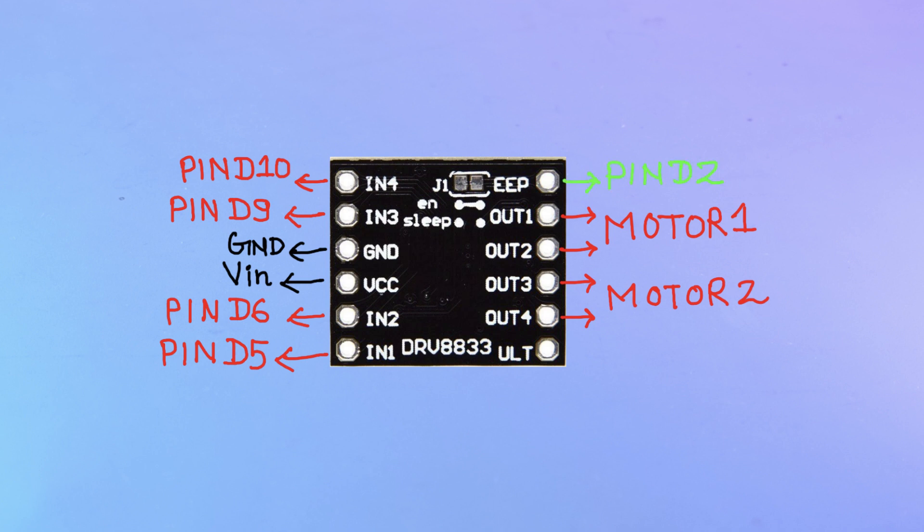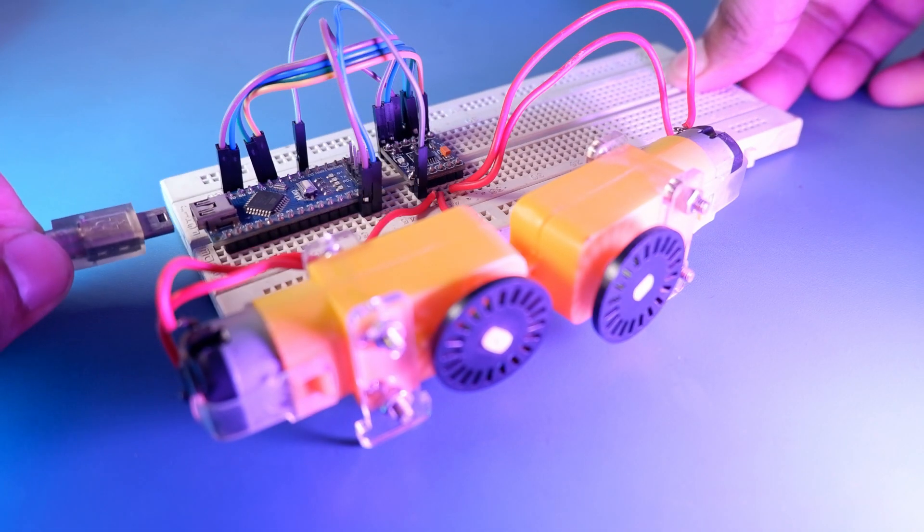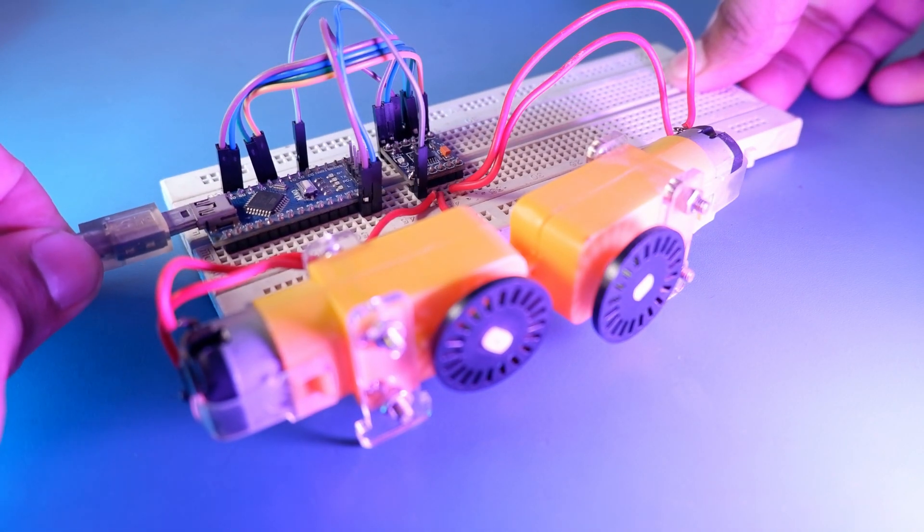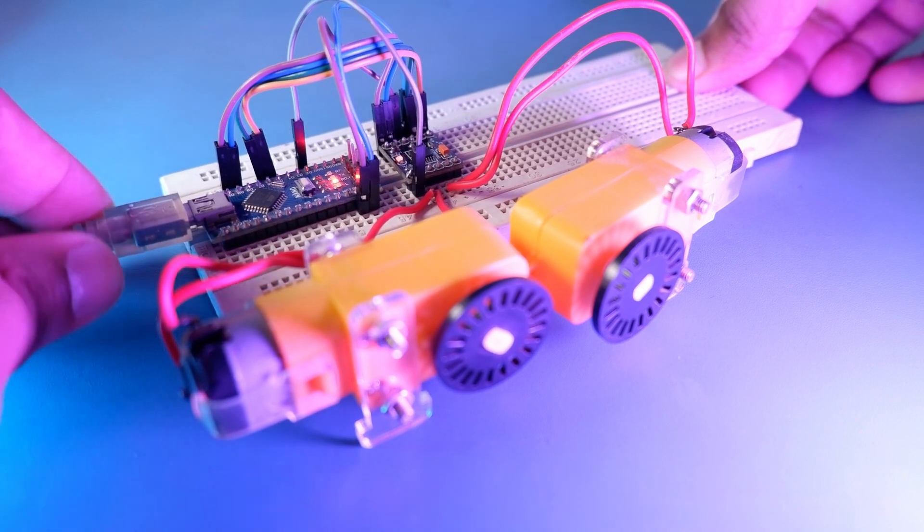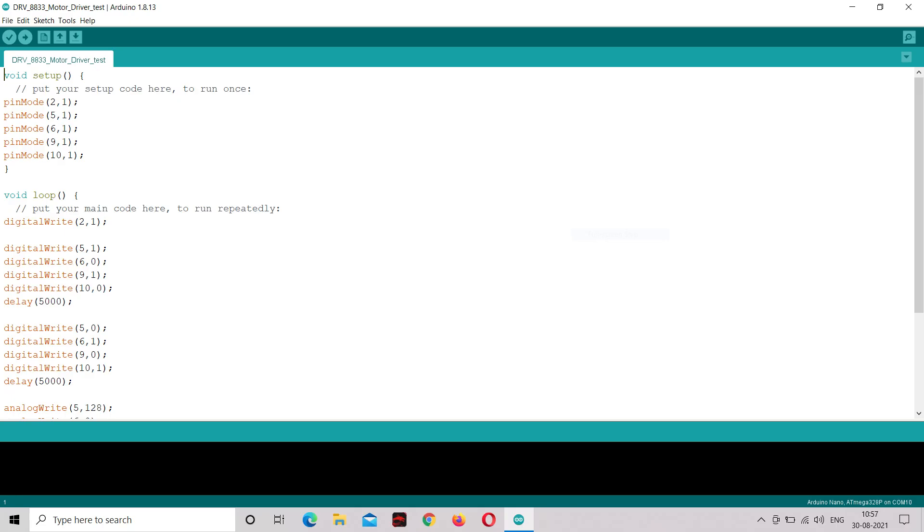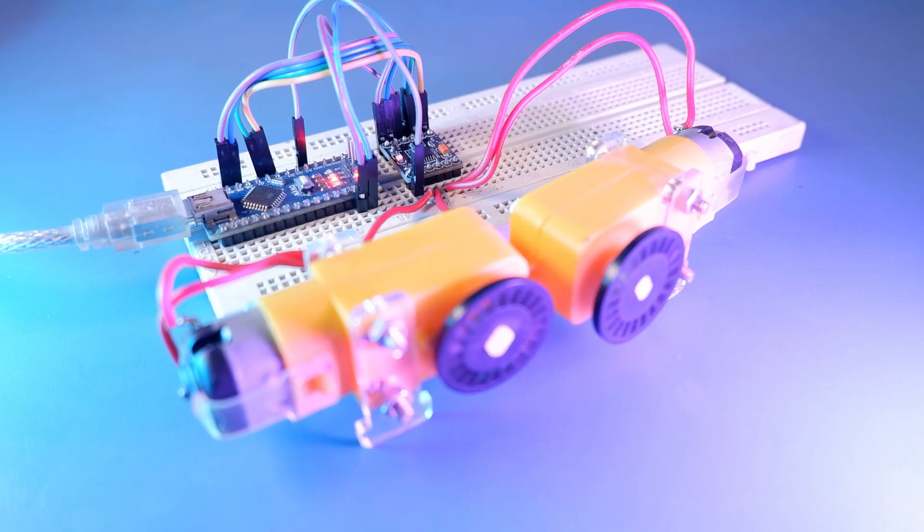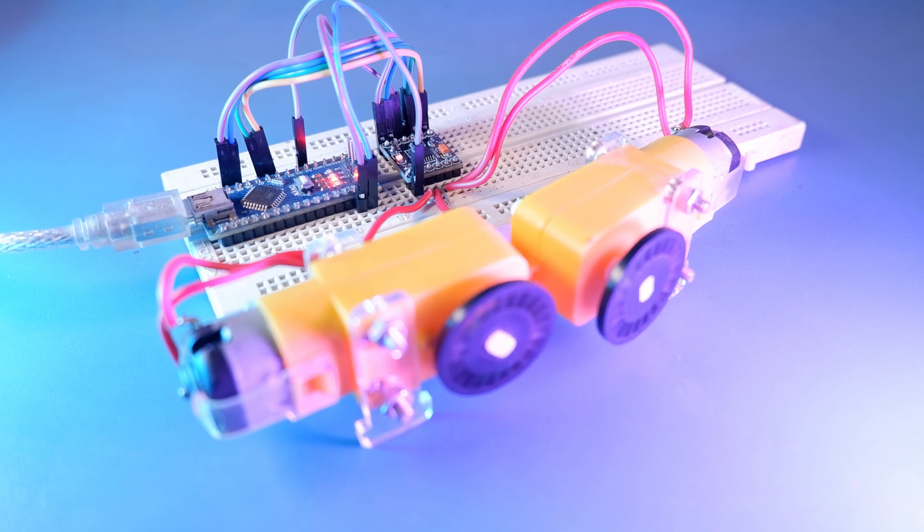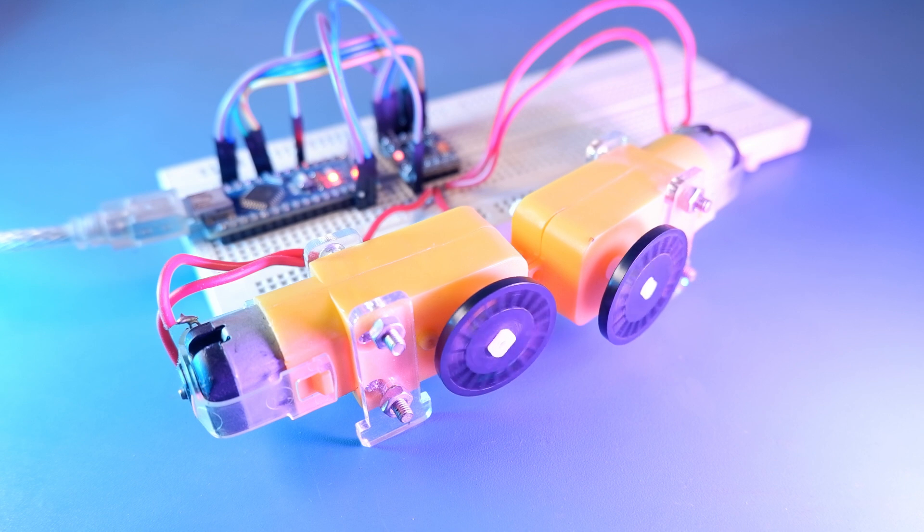And last but not least, the EEP pin will be connected to pin D2 on Arduino. And I have uploaded a very basic sketch for motor driver into Arduino which is pretty self-explanatory. You can download it from the description. So after this you can see our motor driver is working perfectly. Now I need to put it together on a PCB.